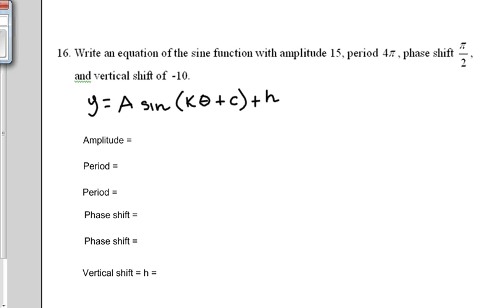Alright, we're going to do this problem here, number 16 from the review. It says write an equation of the sine function with amplitude 15, period 4π, phase shift π over 2, and vertical shift of negative 10.